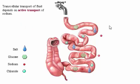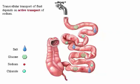Transcellular transport of fluid depends on active transport of sodium. Sodium-potassium pumps in the basolateral membrane pump sodium out of intestinal epithelial cells to keep the intracellular concentration of sodium low and to elevate the concentration of sodium in the interstitial fluid. Sodium enters epithelial cells at the luminal surface co-transported with glucose or amino acids through sodium ion channels and on several other transporters moving down its electrochemical gradient.